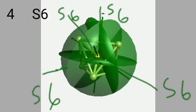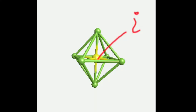There are 4 S6 improper axes, and these are collinear with the C3 axes, passing through opposite faces. There is also a plane perpendicular to this axis. There is an inversion center which exists on the sulfur atom.